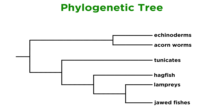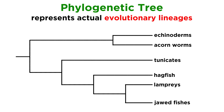A more detailed way of indicating common ancestry is through the use of phylogenetic trees. Though they are similar to cladograms, phylogenetic trees represent real evolutionary lineages, while cladograms are merely formal devices for indicating the hierarchy of clades. Like cladograms, animals that are grouped close together with shorter lines, like lampreys and jawed fishes, are more closely related to each other than to animals that are further away, like the echinoderms.